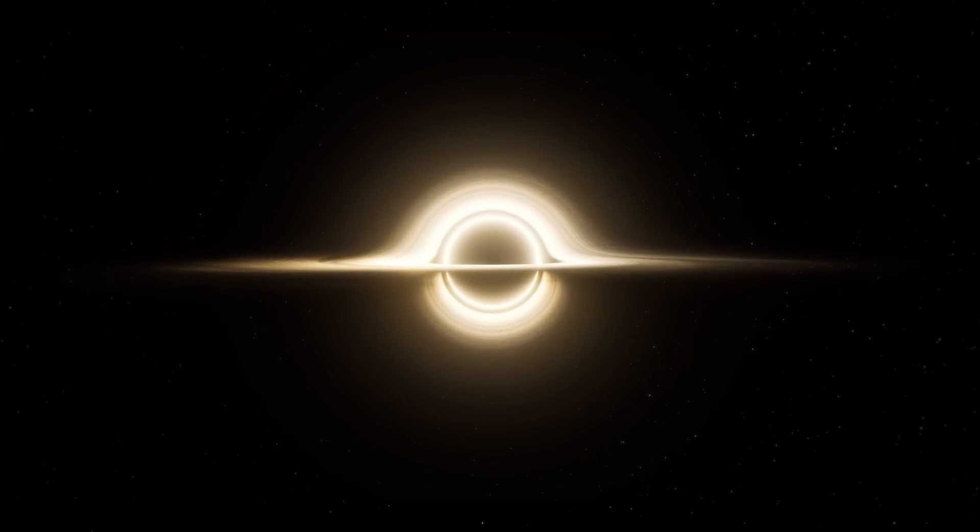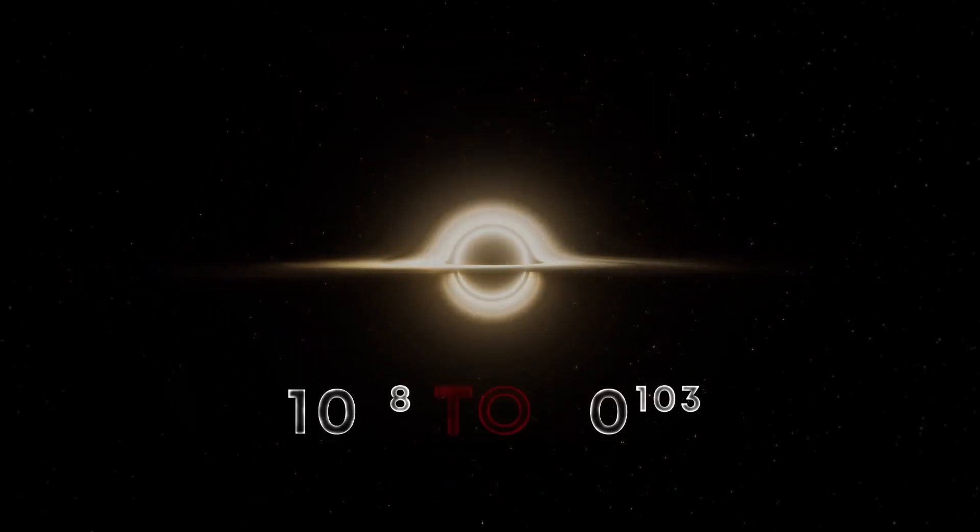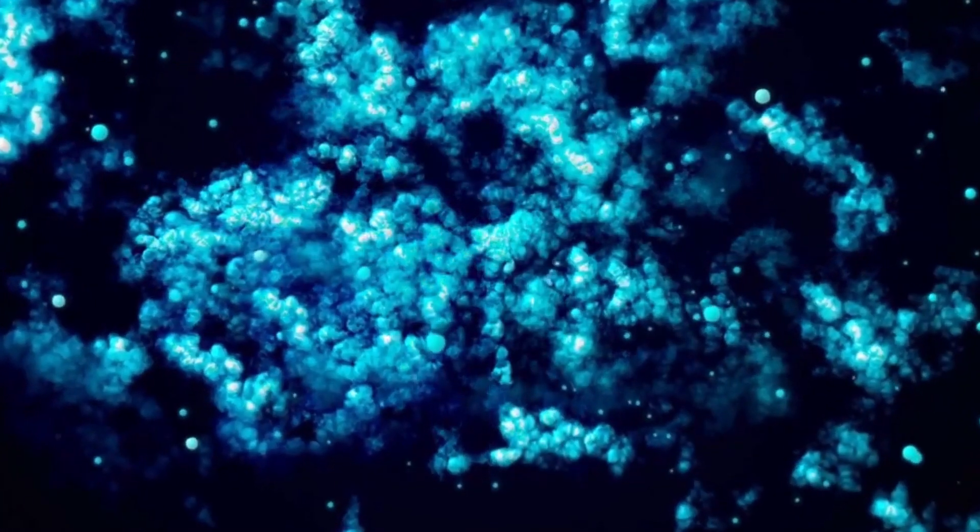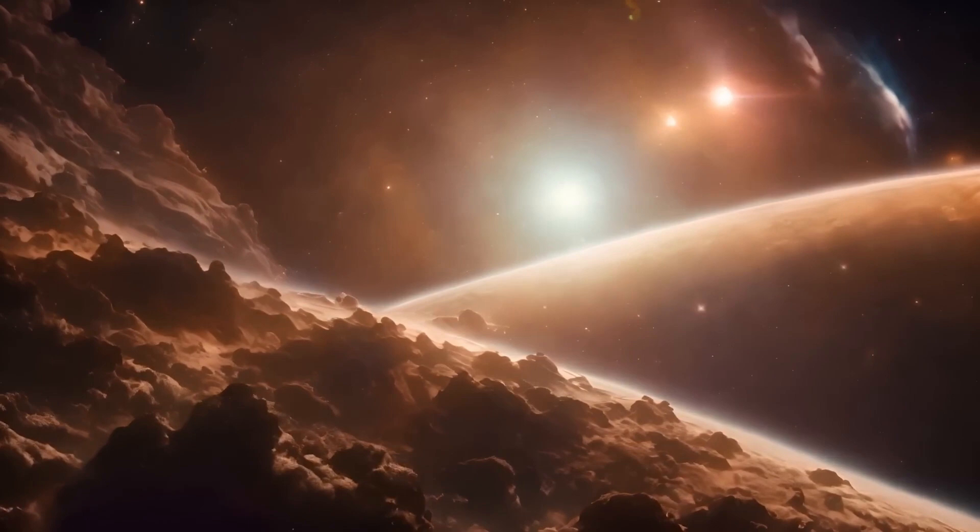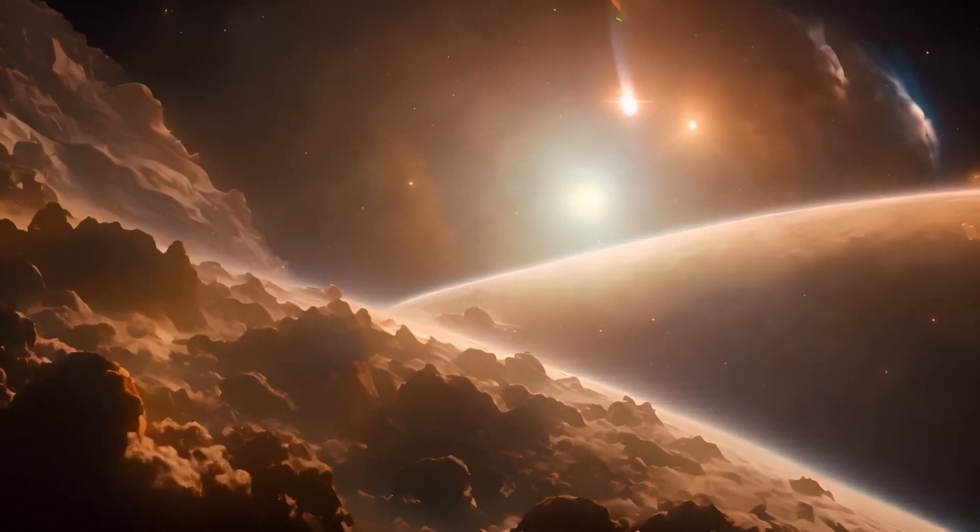Rotation of matter changes everything. Instead of a single event horizon marking the boundary beyond which nothing can escape, spinning black holes have two distinct horizons, an outer horizon and an inner one. These horizons are like invisible walls, marking the regions where the gravitational pull becomes too strong for even light to break free. Rotating black holes also have something called ergo-spheres, swirling zones surrounding a black hole where space-time itself is dragged along by its rotation faster than the speed of light.